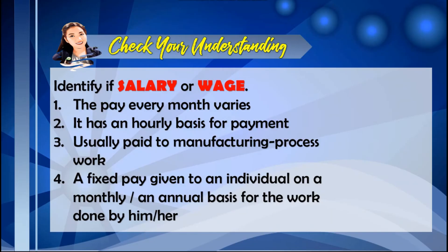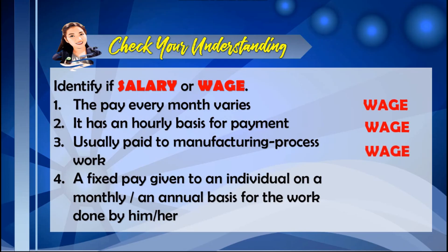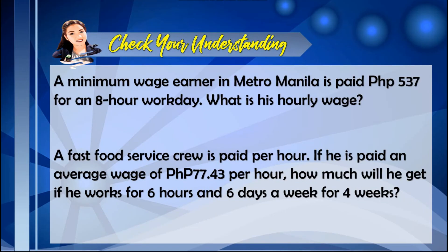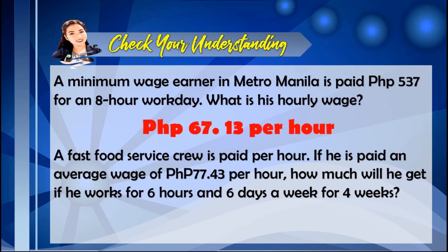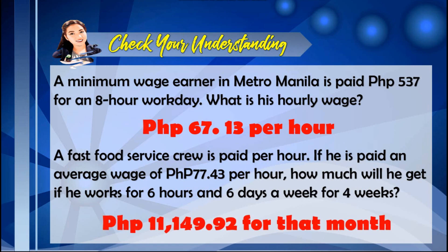At this time, check your understanding about salary and wage — you may pause the video to answer. Let's check your work: Number 1, pay every month varies — this is under wage. Number 2, hourly basis for payment — under wage. Number 3, usually paid to manufacturing process workers — also under wage. Number 4, a fixed pay given to an individual on a monthly or annual basis — this is under salary. For the problem solving: 67.13 pesos per hour is the hourly wage of a minimum wage earner in Metro Manila, and 11,149.92 pesos is the total wage of a fast food service crew for that month.